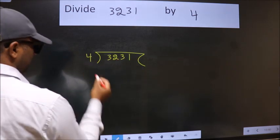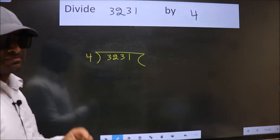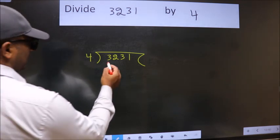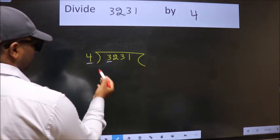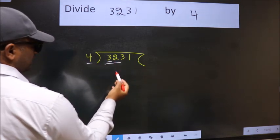4 here. This is your step 1. Next, here we have 3. Here 4. 3 is smaller than 4, so we should take 2 numbers: 32.